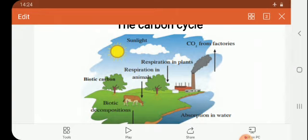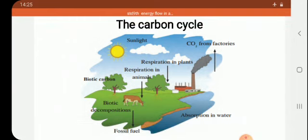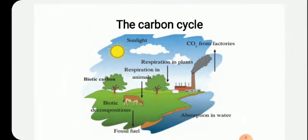The carbon present in the atmosphere, in the form of carbon dioxide, is given to living organisms. Plants take that carbon dioxide from the atmosphere and prepare food by the process of photosynthesis. Plants give out oxygen, which is used by animals. When all living organisms die, after their death, carbon is passed back to the atmosphere. This is called the carbon cycle.